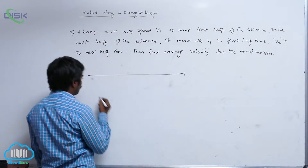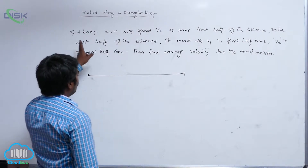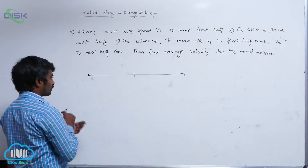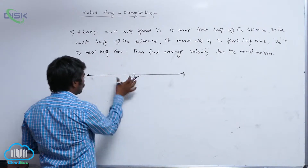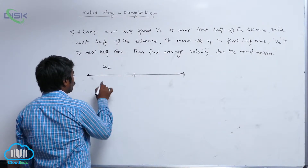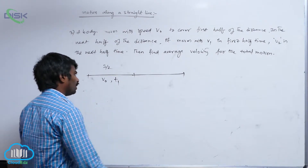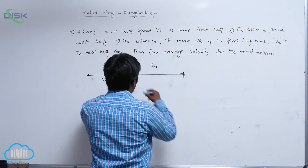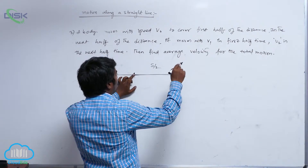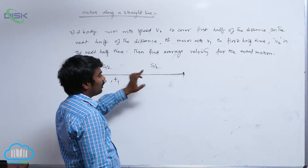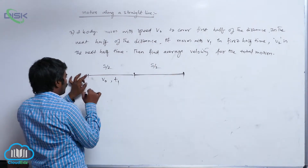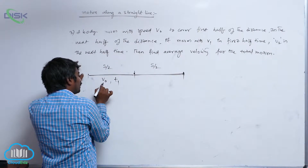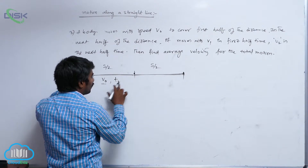Let me take this as the total displacement S. A body moves with speed v0 to cover the first half of the distance, so we divide this total displacement into two parts. The first part is S/2 and it moves with v0 — let it take time t1. The remaining half is again S/2, and the first half is covered with speed v0, taking time t1.